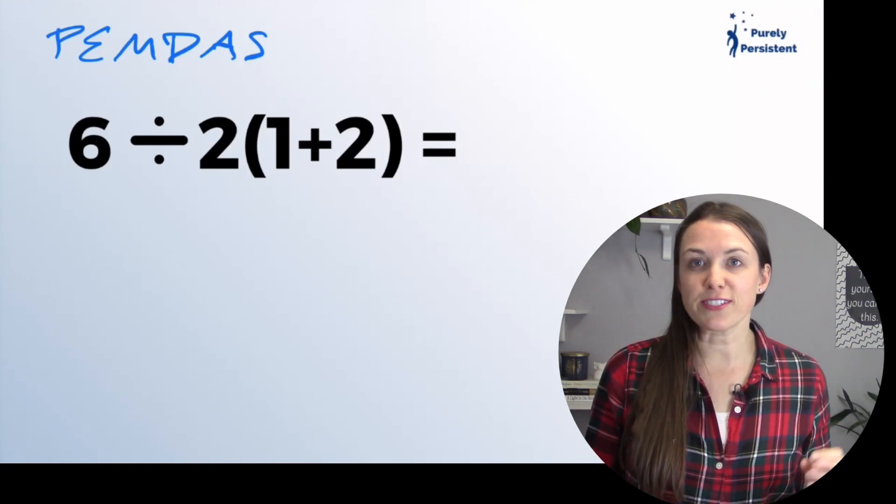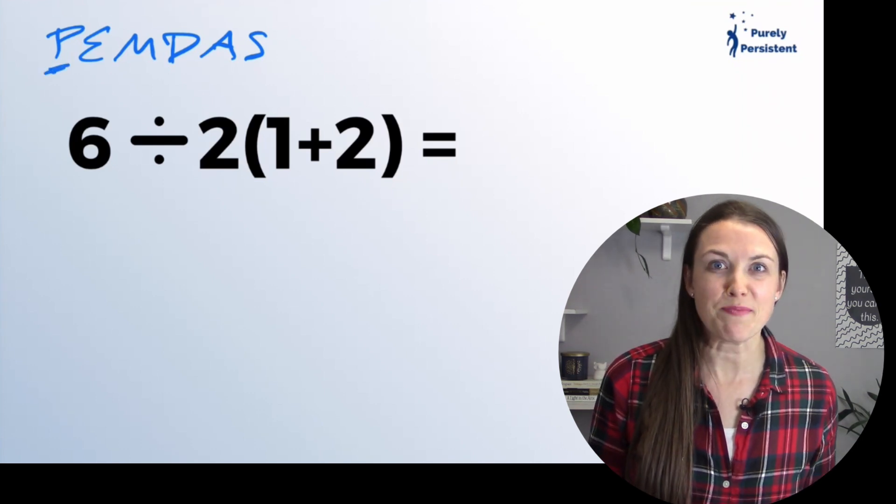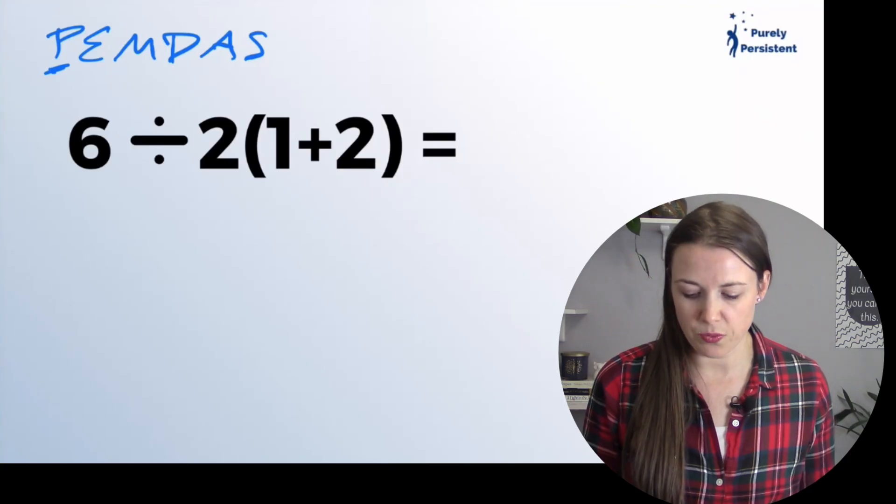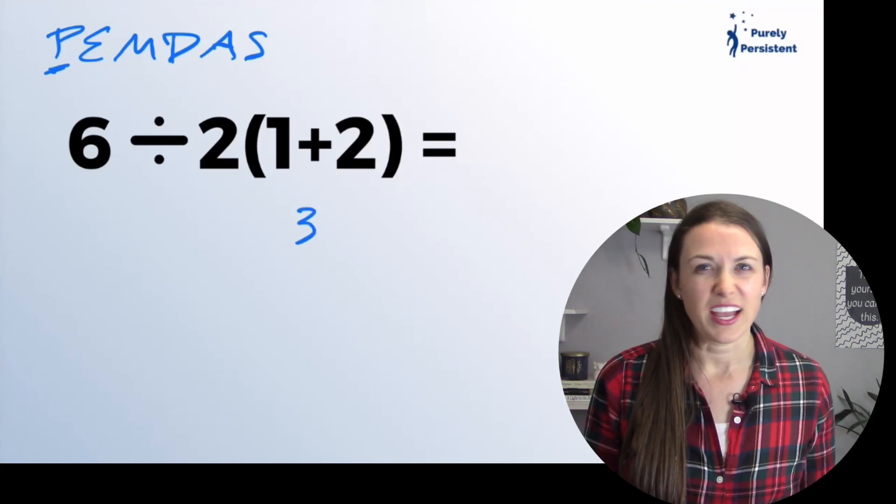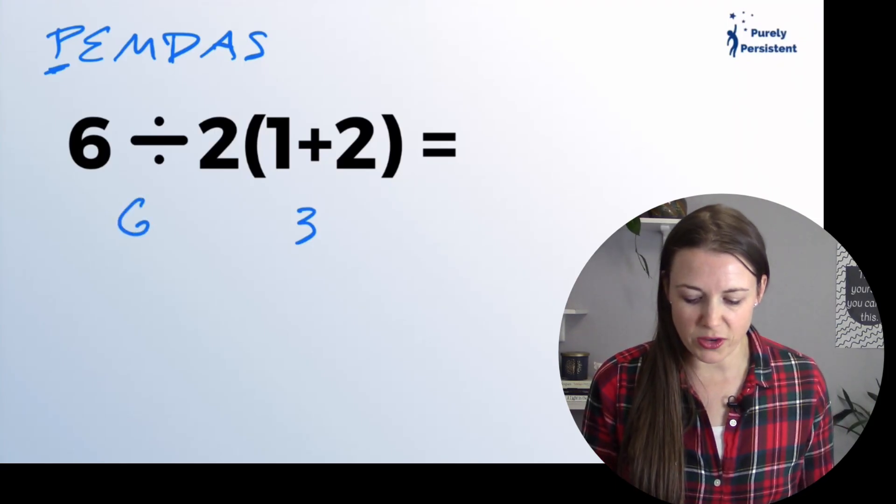So when you're doing this, the first thing you're going to do is the P, and this is just an acronym for parentheses. So I'm going to add 1+2, which is 3. And I always like to rewrite my problem every time I make a step because then I'm going to be less likely to have any errors.